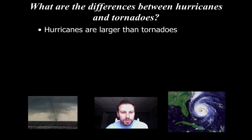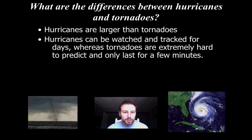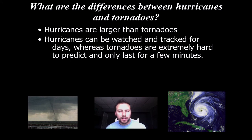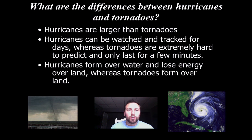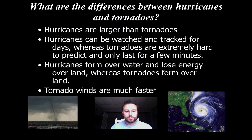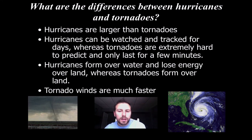Some differences between hurricanes and tornadoes: hurricanes are definitely a lot larger, covering hundreds of miles versus tornadoes which are very localized — under a mile in some cases. With hurricanes, we can watch, track, and approximate their paths and duration; with tornadoes, we cannot. Hurricanes lose energy once they get over land, whereas tornadoes form over land. And while tornado winds are much faster, their damage is far more localized.